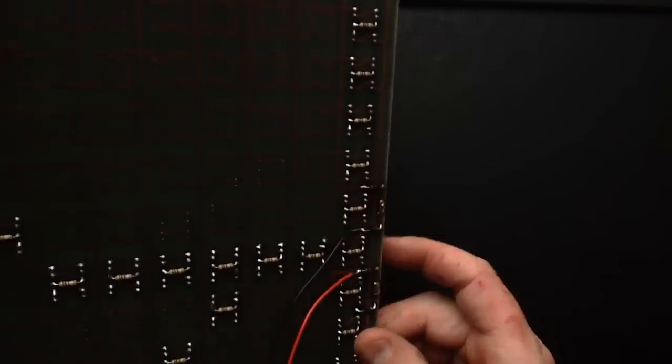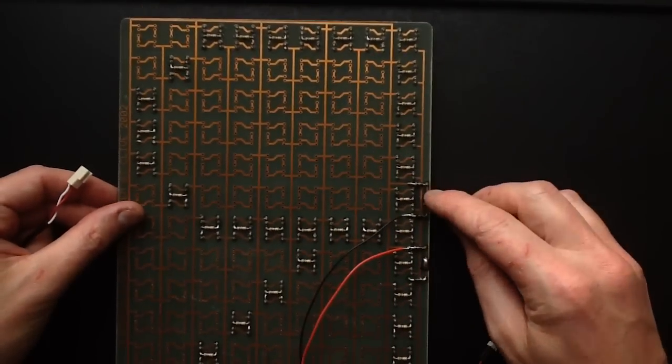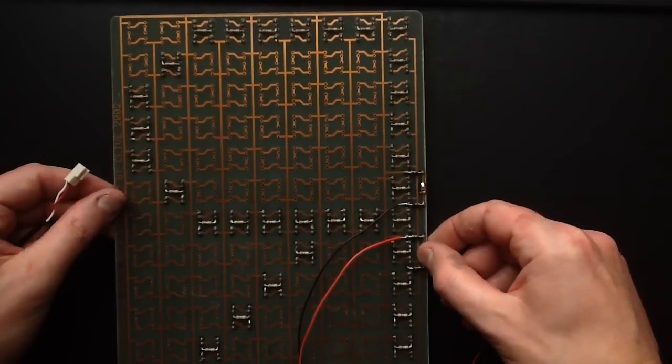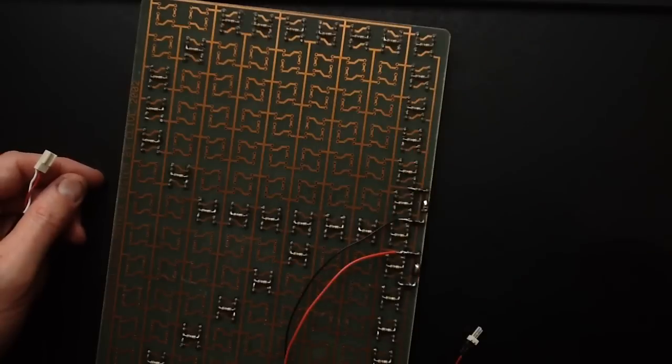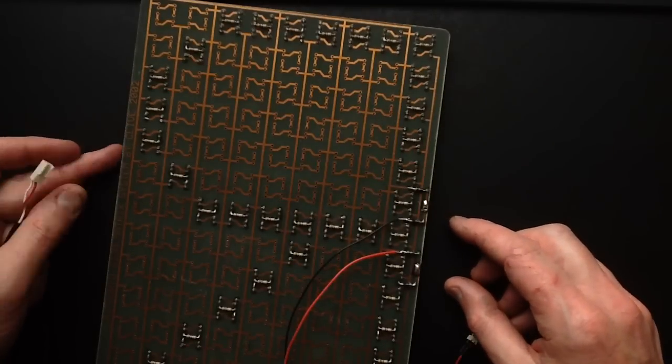But again, it's the same, but it actually had the bridge rectifier built on as discrete diodes and was designed to take a bus bar of wires just tacked along. This was a 2002 this one.